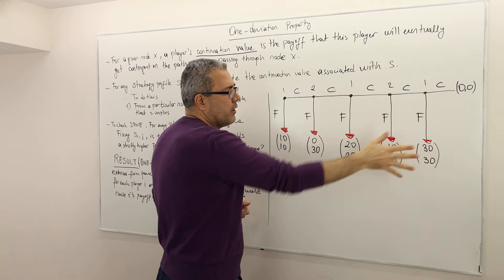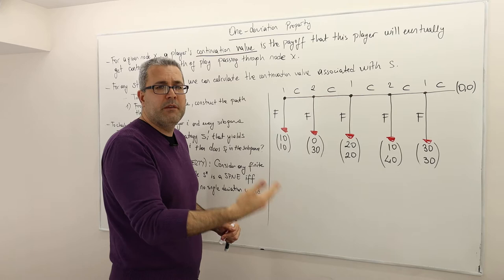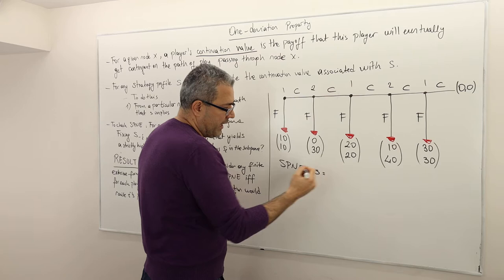Nevertheless, remember the concept of strategy is what the players will do at every decision node they may have, even those that will never be reached. So how do we write the subgame perfect Nash equilibrium strategy profile? Player one has three decision nodes, so his strategy is a triplet.